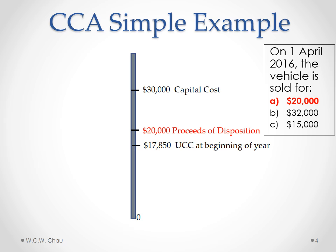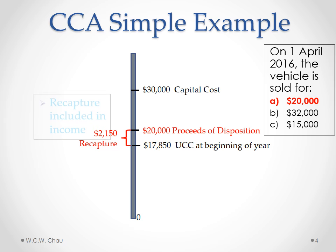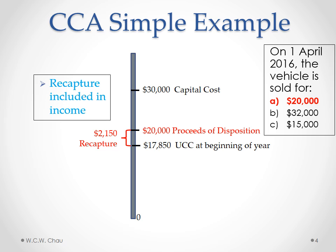Under the first scenario of $20,000, the business is receiving proceeds of disposition of $20,000. The difference between the $20,000 proceeds and the UCC of $17,850 is considered to be recapture of $2,150. It's called recapture because essentially the business is recapturing CCA or depreciation that it had previously claimed as an expense in a prior year. So it's receiving that back when it received the $20,000 of proceeds of disposition. The tax rules require that recapture to be included in income.